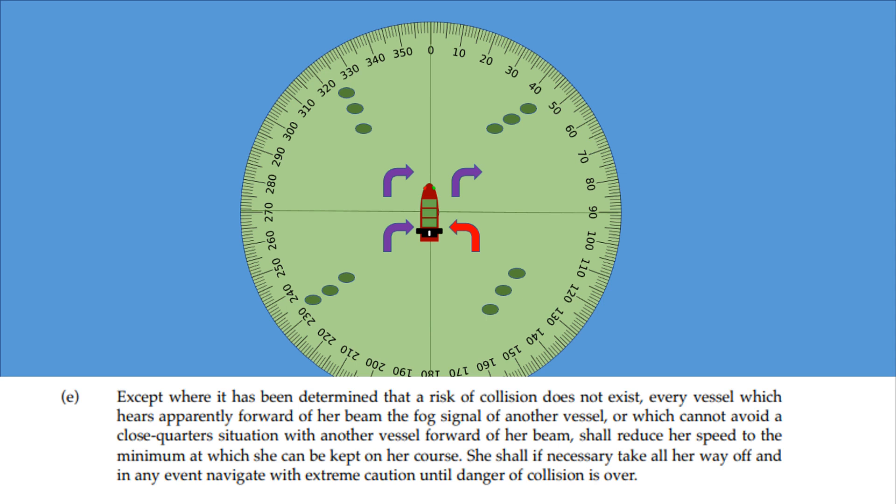That means we have entered a close quarter situation in restricted visibility, and we should be reducing our speed to the minimum at which we can be kept on course. That's the slowest possible speed that we can still maintain steerage. It's not dead stick, we still need to maintain steerage. But, we shall, or must, if we have to, take off all our way, go dead stick, maybe apply a stern if we have to, and in any event navigate with extreme caution until that close quarter situation has passed.